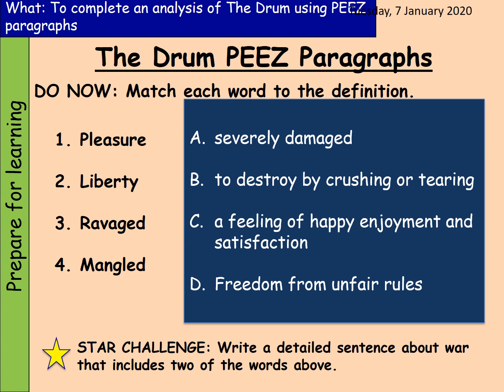Your first task today — your do-now task — is to match each word to its correct definition. The four words are: pleasure, liberty, ravaged, and mangled. The definitions are: severely damaged; to destroy by crushing or tearing; a feeling of happy enjoyment and satisfaction; and freedom from unfair rules. If you want to take on the star challenge, write a detailed sentence about war that includes two of the words above. Pause the video here and complete that task.